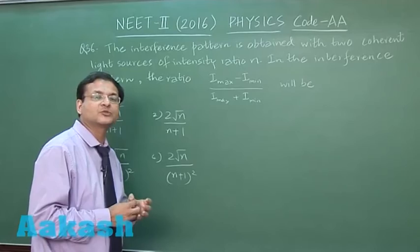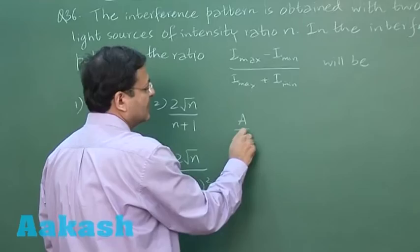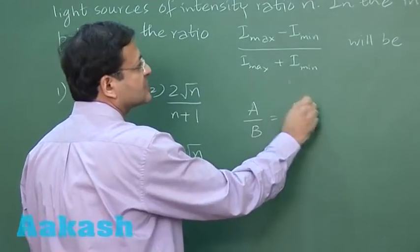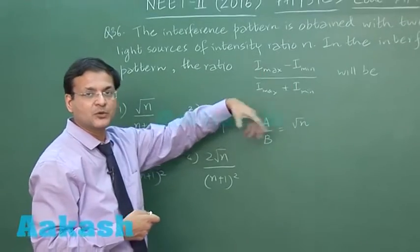So I can say a/b is nothing but √n, which is given to you, because the intensity ratio is n given, so amplitude squared is intensity.